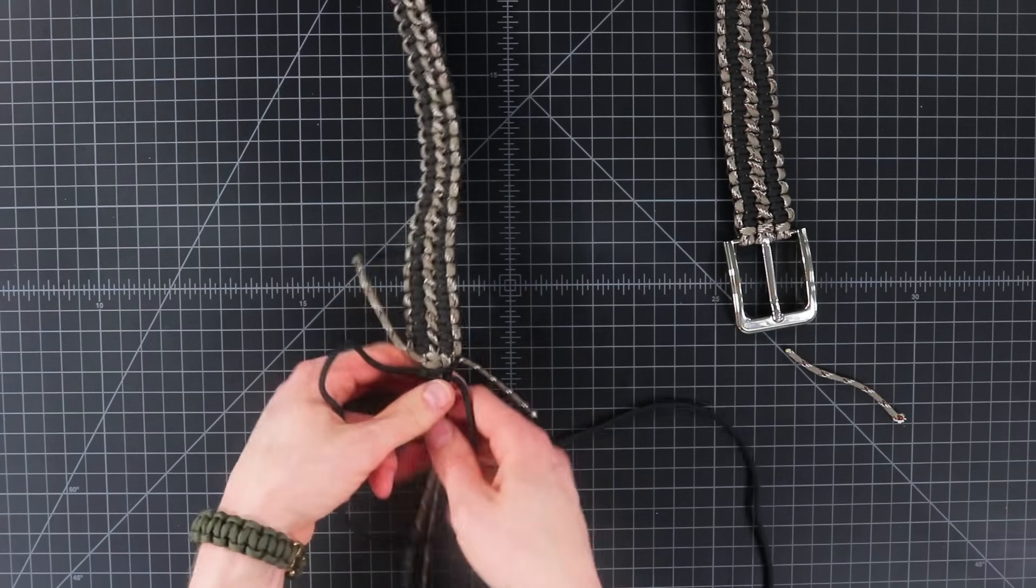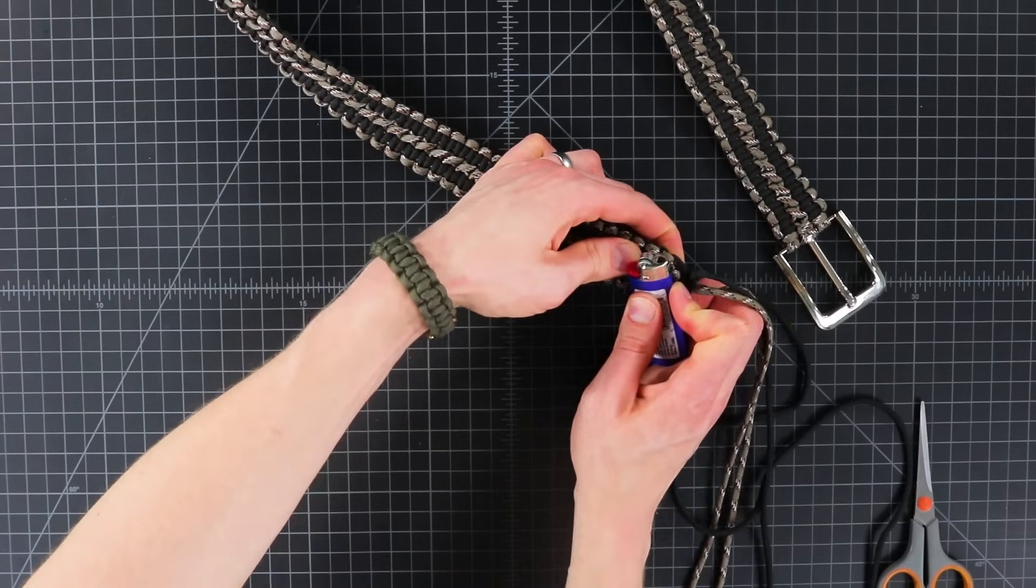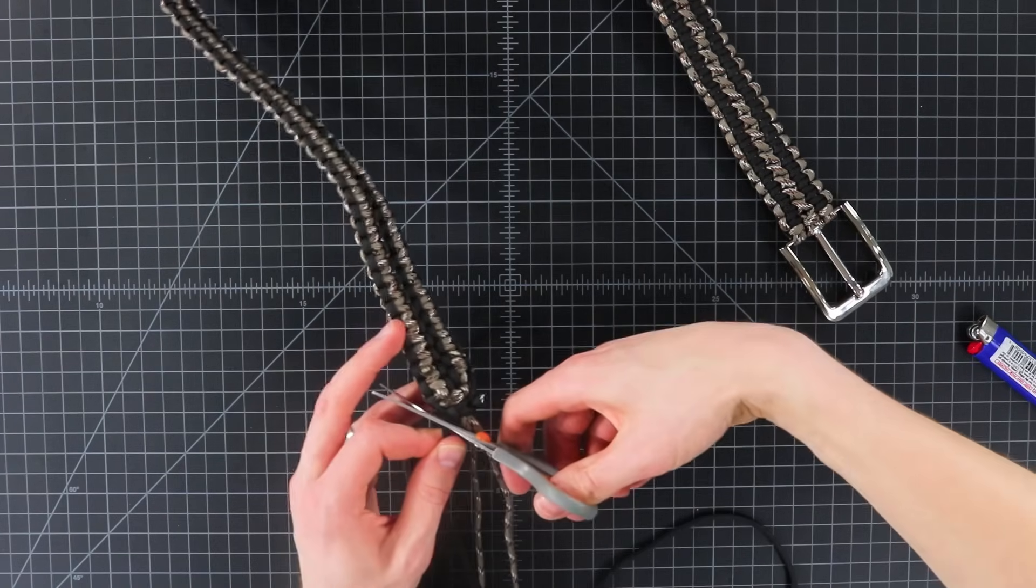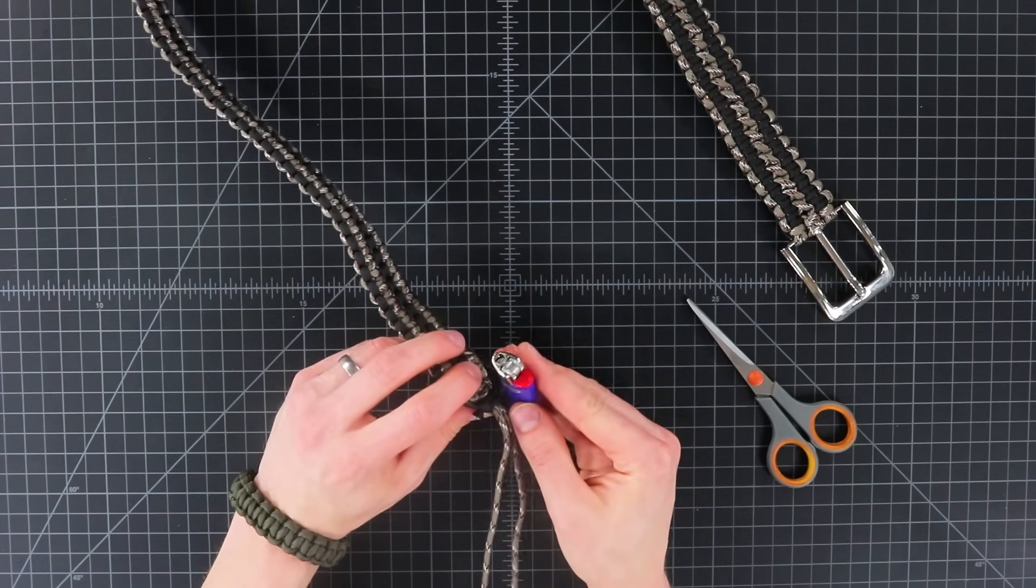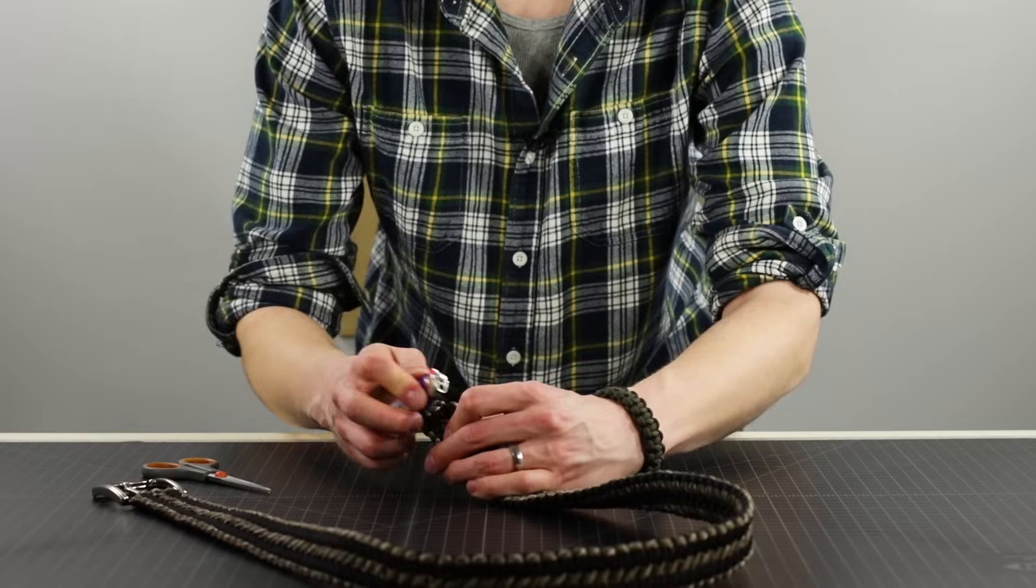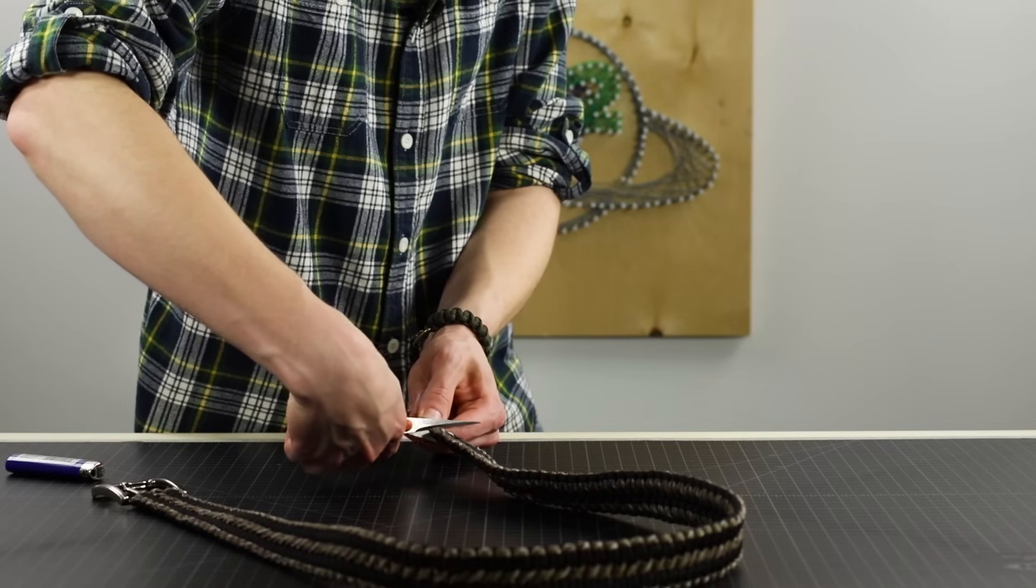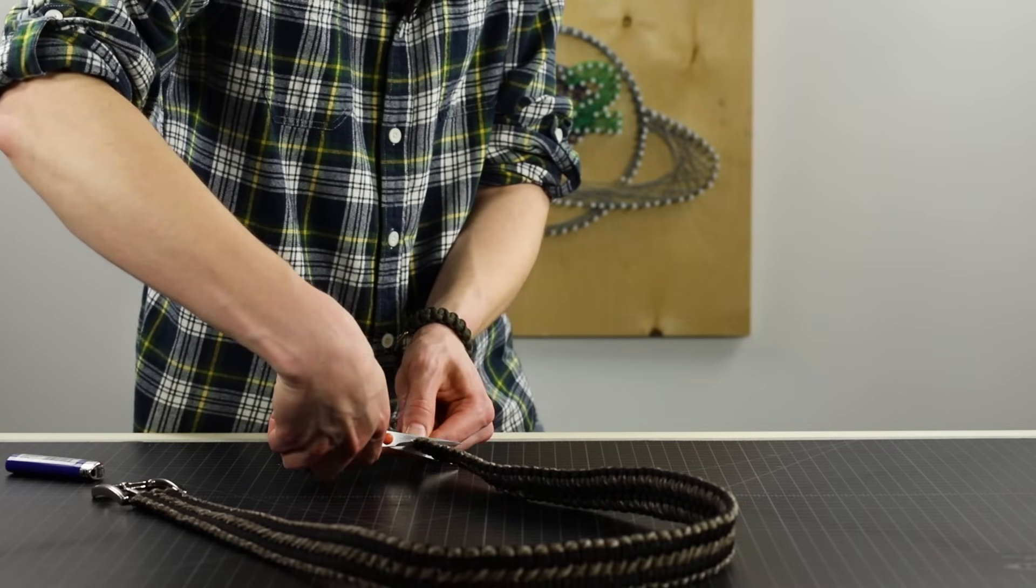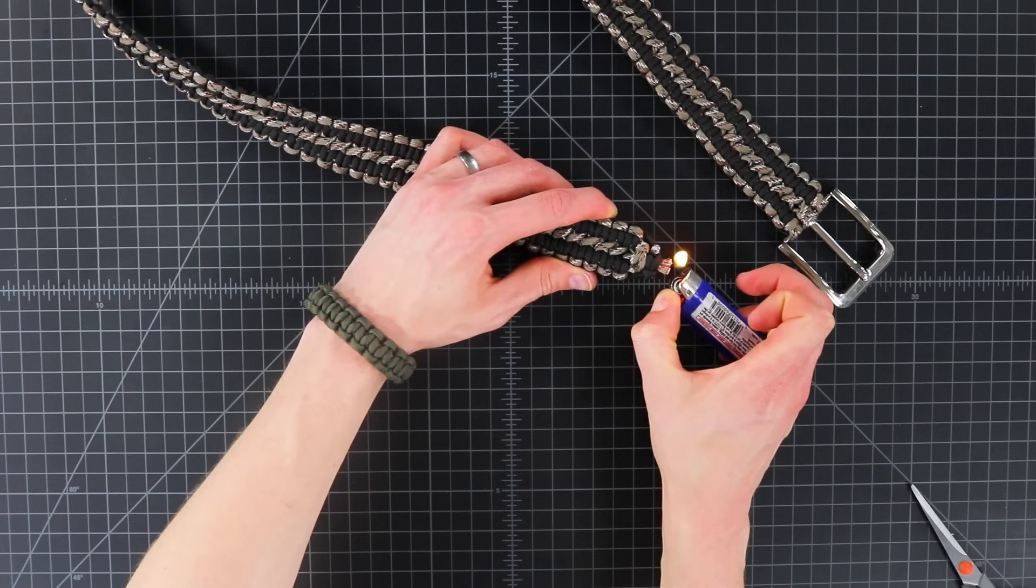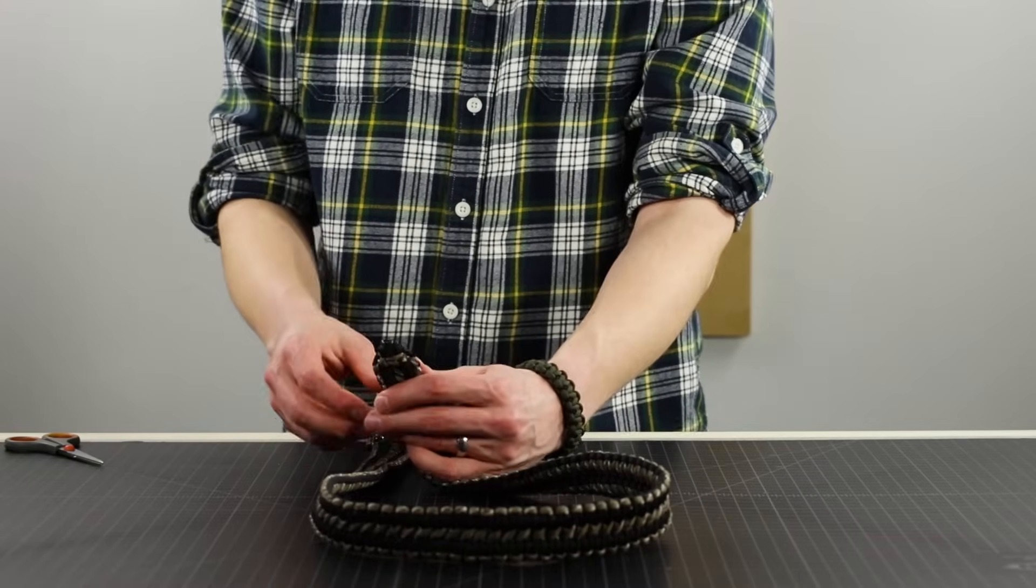Now we can go ahead and clip all of our ends. Good to do those two first. And then our black ones. And then you can go ahead and cut off the very end. I'm not going to flatten these ones. I'm just going to melt it until they're nice and rounded, so that it doesn't catch on clothing. And it's pretty much the end of our belt.